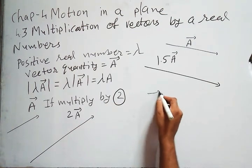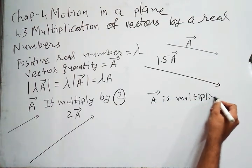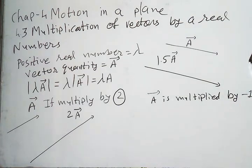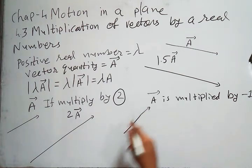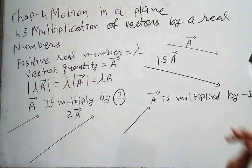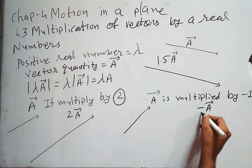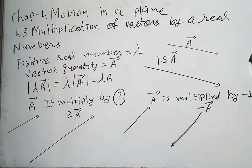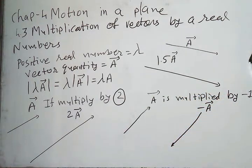Similarly, if vector A is multiplied by minus 1, suppose that vector A is in this direction. Then our vector's direction totally becomes opposite. It will be in the opposite direction.